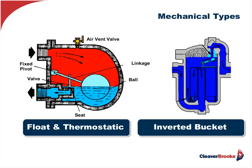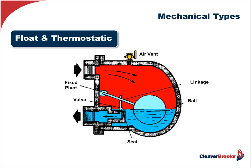Now the mechanical types — the float and thermostatic and the inverted bucket. The float and thermostatic trap works very much like a bathroom toilet float. Condensate comes in, filling up the bowl of the trap, causing the float to rise. As it does, it raises the valve and allows the condensate to purge out. It's also got a constant thermostatic vent — hence the name float and thermostatic trap. This thermostatic vent will expand and close off when there's steam present because it's hotter, and as the condensate builds the temperature decreases, causing it to contract and allow air to vent.